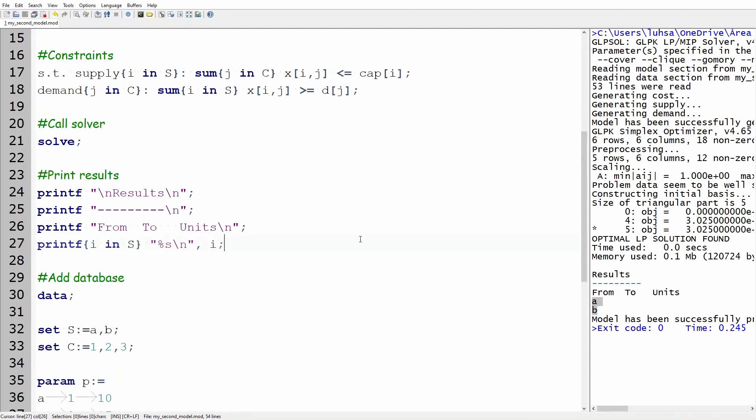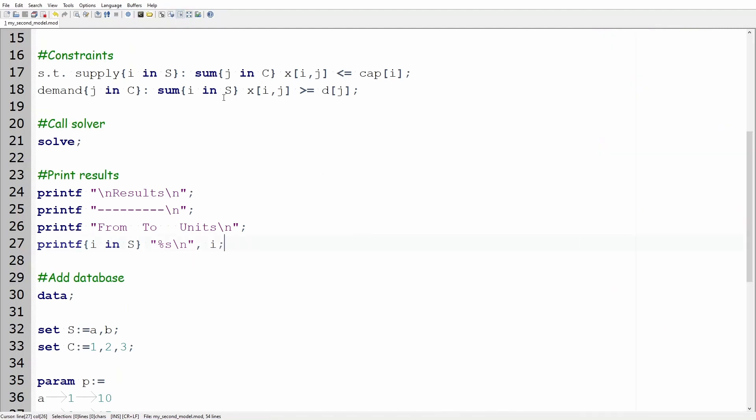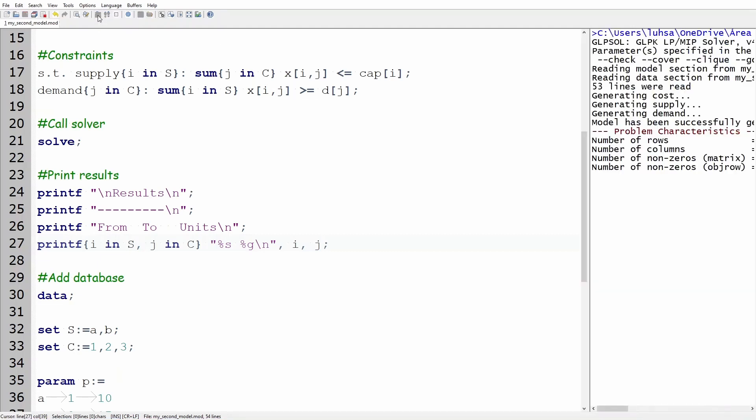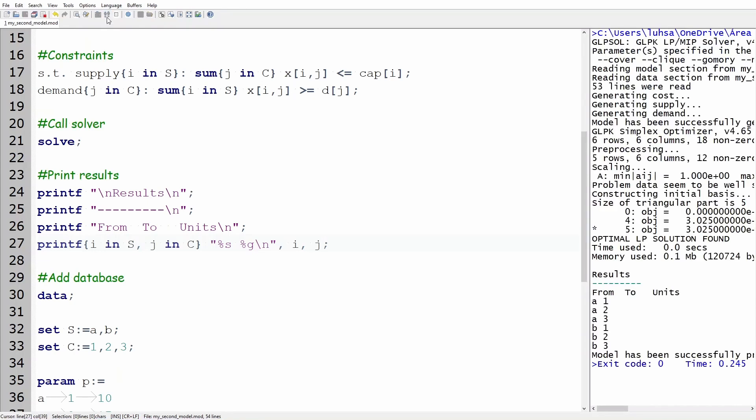The next step consists in adding j under the column to. Inside the keys in the printf statement include comma j in c. Also, inside the quotation marks add %g before backslash n and additionally type comma j before the semicolon. Let's run the model and see the print statement.